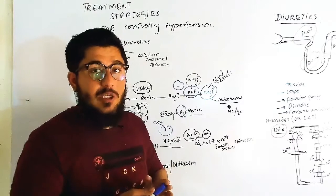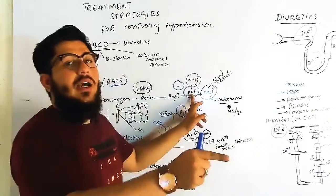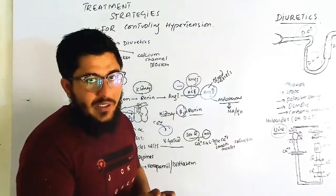We will give ACE inhibitors. What will they reduce? They will block angiotensin converting enzyme. The important thing is this enzyme converts angiotensin 1 to 2. When angiotensin 2 does not form...